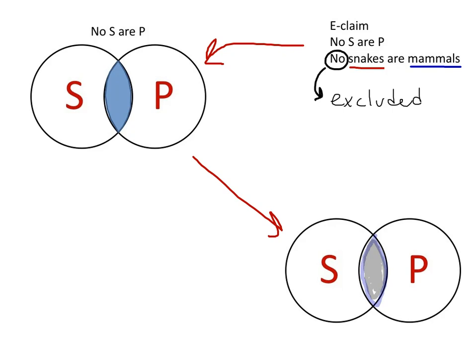It's talking about No S are P, so none of the members of the S class are included in the P class. No snakes are mammals, so it excludes that region.